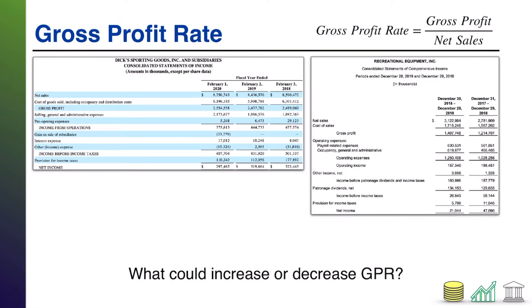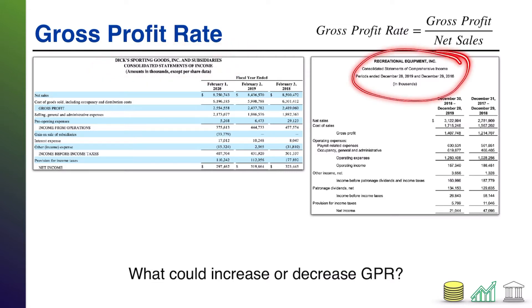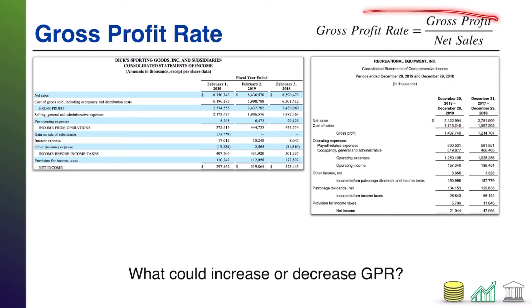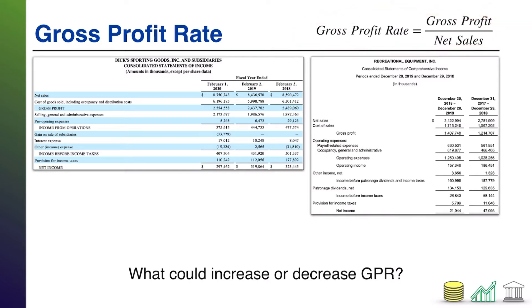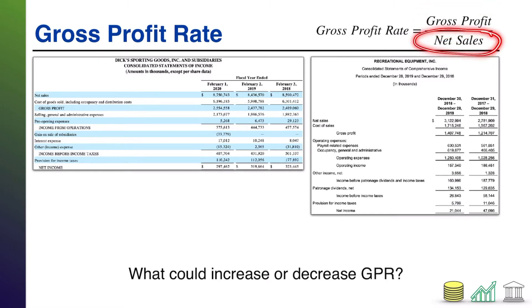Here I show you two pieces of income statement. One is for Dick's Sporting Goods, one is for REI. This is from back in 2018 and 19. And I have up here in the corner that if we want to calculate what's known as the gross profit rate, it is a matter of taking the gross profit of the company and dividing it by the net sales of the company.